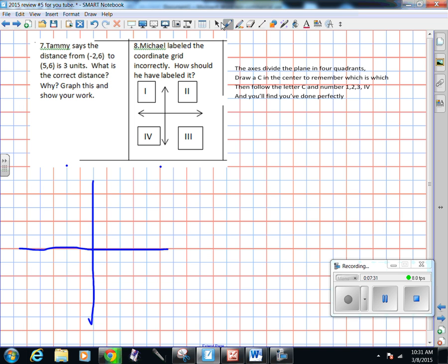Next one, Michael labeled coordinate grid incorrectly. So the axes divide the plane in four quadrants. Draw a C in the center to remember which is which. Follow the letter C, so I'm going to begin here and number 1, 2, 3.